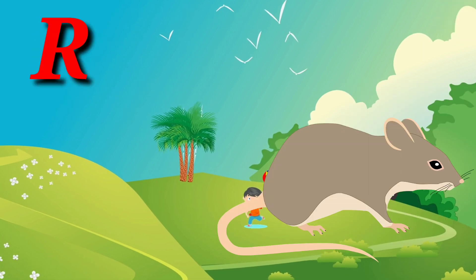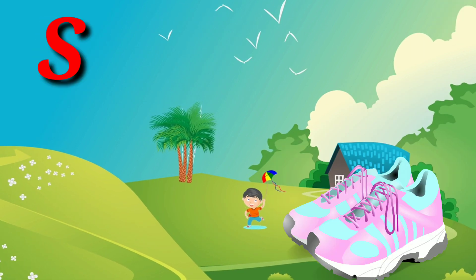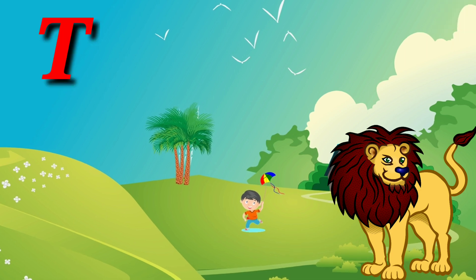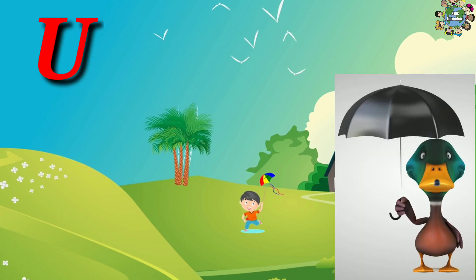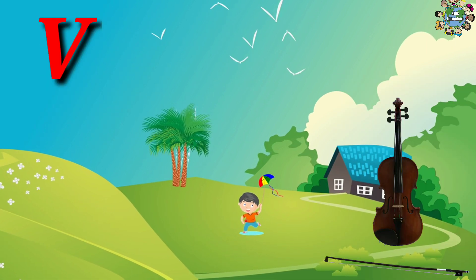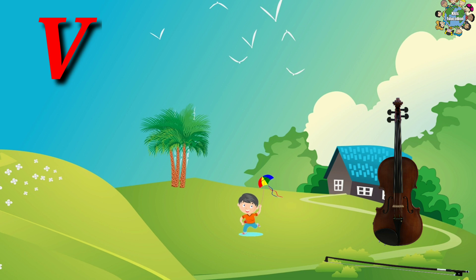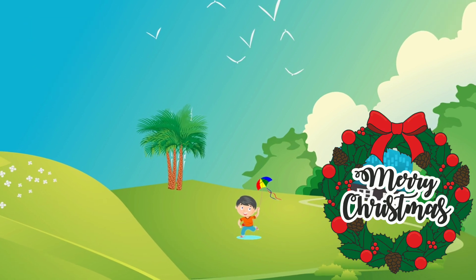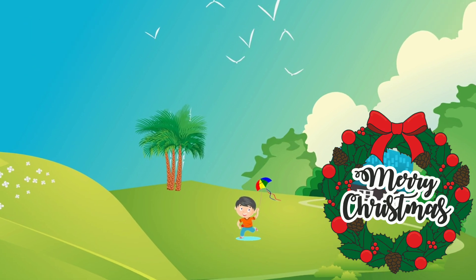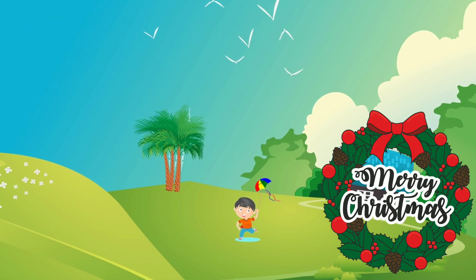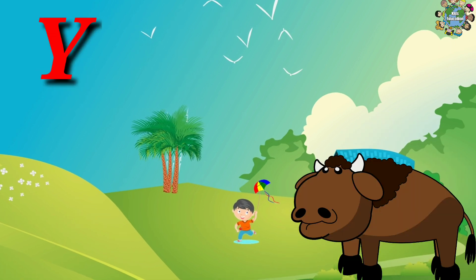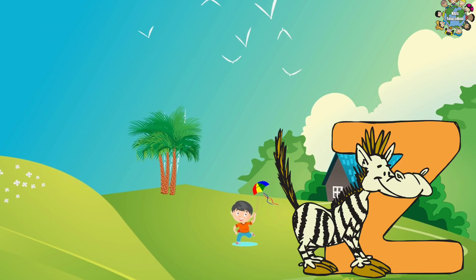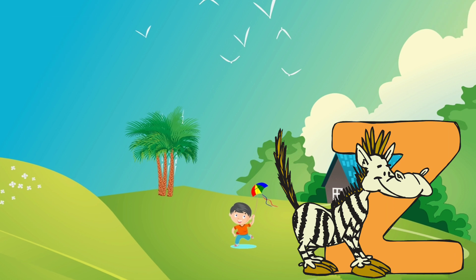R for Rat, S for Sun, T for Tiger, U for Umbrella, V for Van, W for Wheel, X for X-ray, Y for Yo-yo, Z for Zebra. Good!